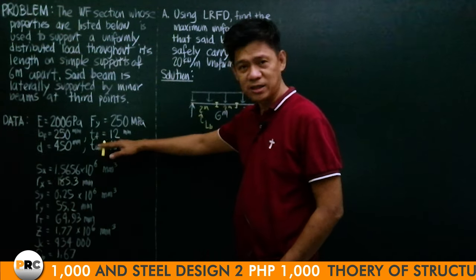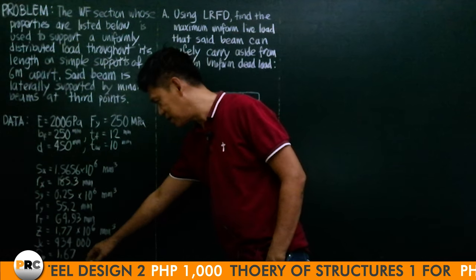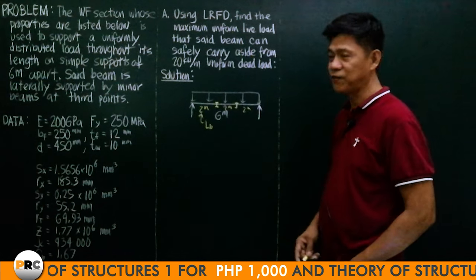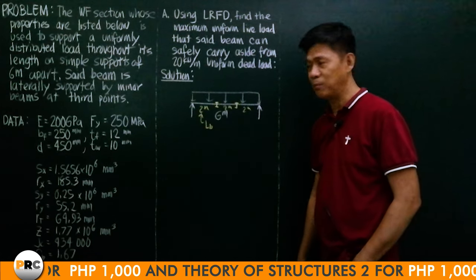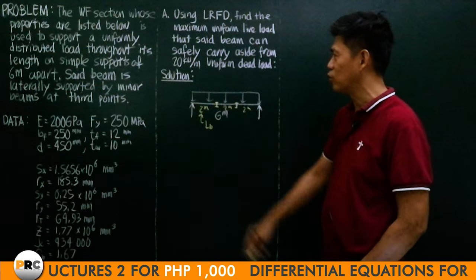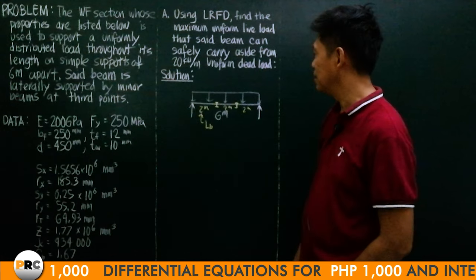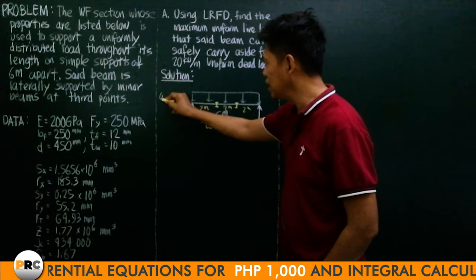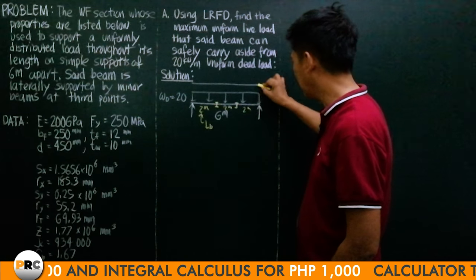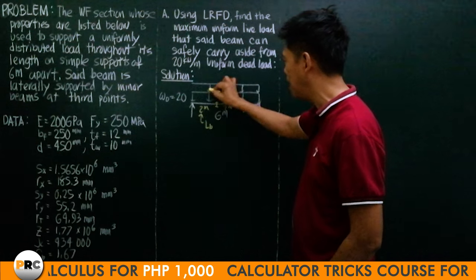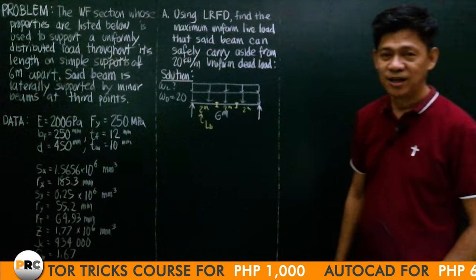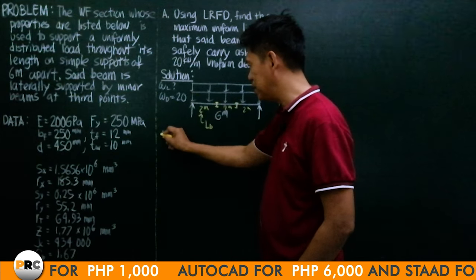These are the section properties, including Cb = 1.67. Using LRFD, find the maximum uniform live load that the beam can safely carry, aside from the 20 kN/m uniform dead load. So we have a uniform dead load of 20 kN/m, and on top of that we have the uniform live load which is unknown. In order for this beam to be safe...